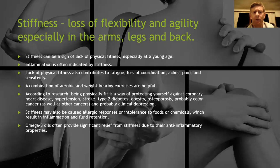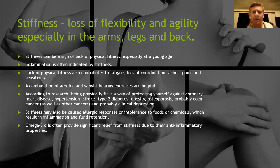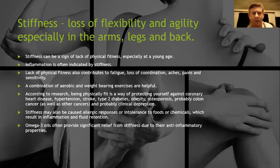Omega-3 oils often provide significant relief from stiffness due to their anti-inflammatory properties. If you take a couple of omegas before you go out for a run or cycle, it's very good for what they call DOMS - delayed onset muscle stiffness. Because of its anti-inflammatory properties it works really, really well. The new magnesium also helps tremendously from this perspective.